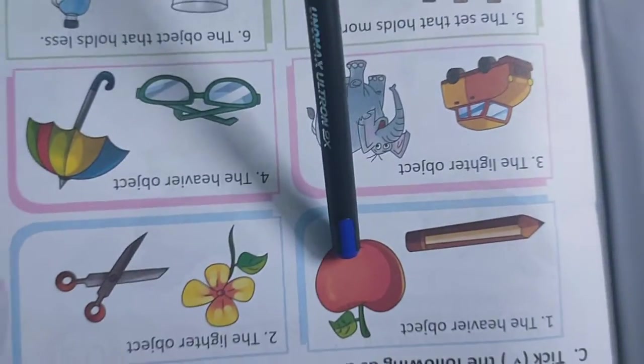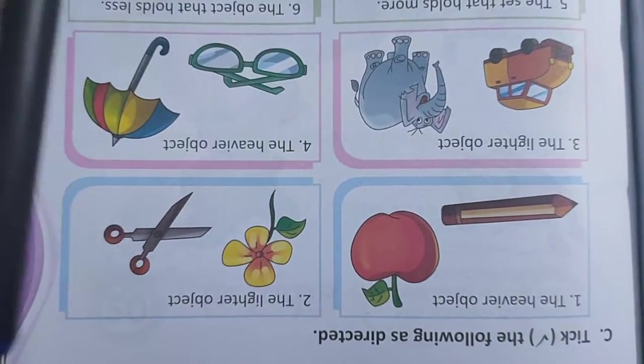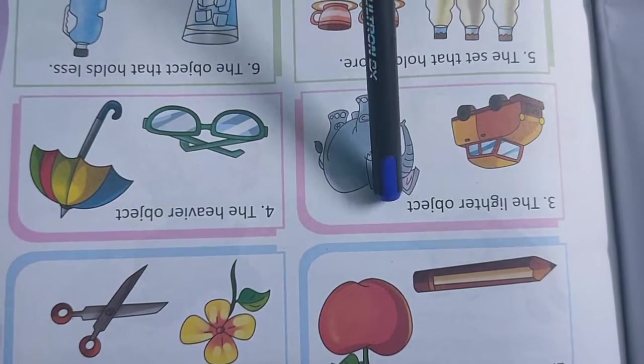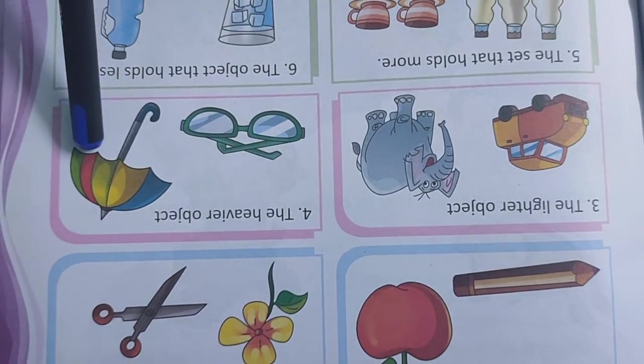The heavier object, apple. The lighter object, flower. Here also lighter object, car. Heavier object, umbrella.